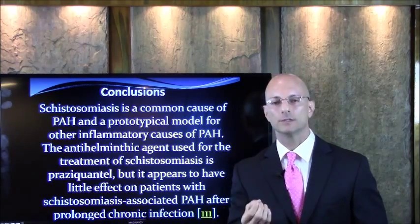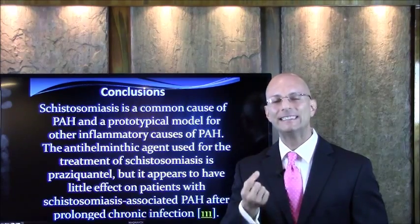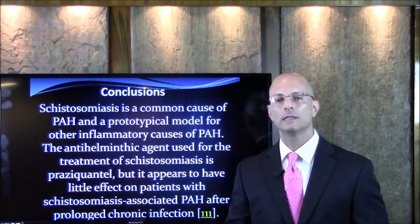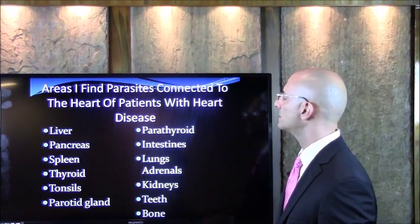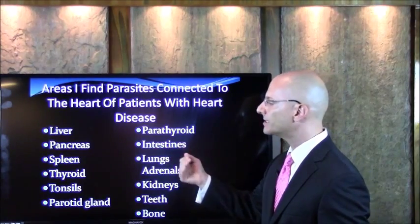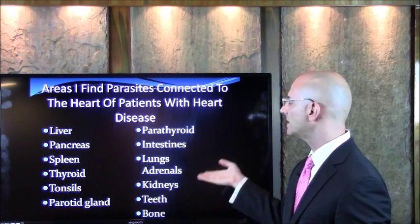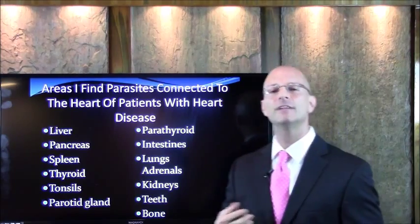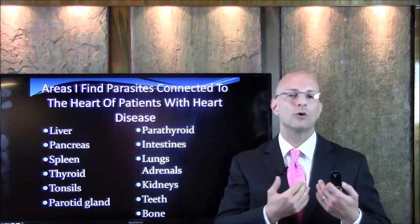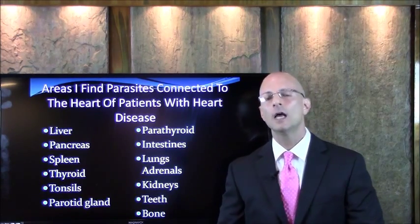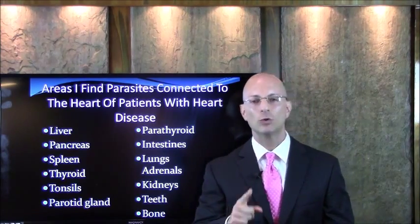We have to use better skills. In my practice, I have different skills that can actually find what it takes to eliminate a parasitic infection. Areas where I find parasitic infections connected to the heart in patients with heart disease: the liver, the pancreas, the spleen, the thyroid, the tonsils, the parotid gland, the bone, the teeth, the kidneys, the adrenals, the lungs, the intestines, the parathyroid. I find infections in different parts of the body, and those infections can be leading to the heart — or maybe they reached the heart first and are spreading to other organs. We have to eliminate all infections in all different tissues for you to be able to reverse your heart disease.